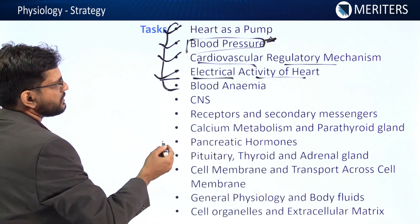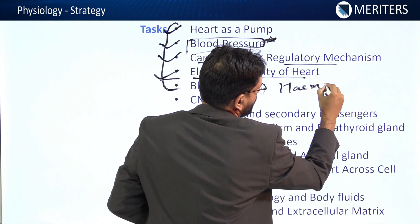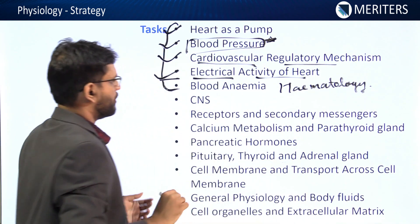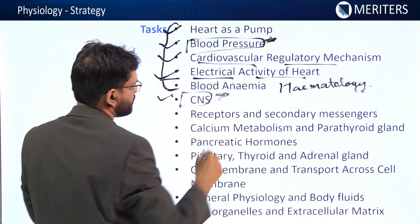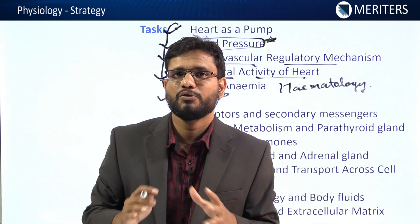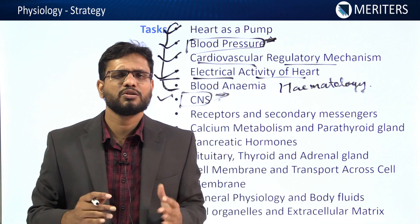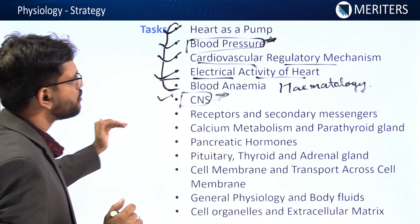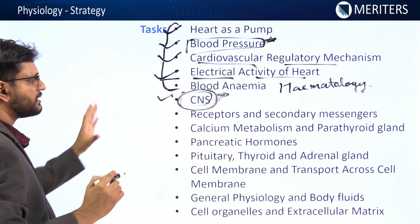Then comes hematology, which has two tasks: blood and anemia. Then we have certain important frequently asked questions about the CNS. We cannot go into much depth in CNS because not a lot of questions are asked from it in physiology, so whatever is important for CNS is covered in the tasks here.